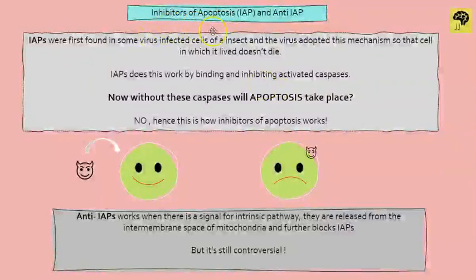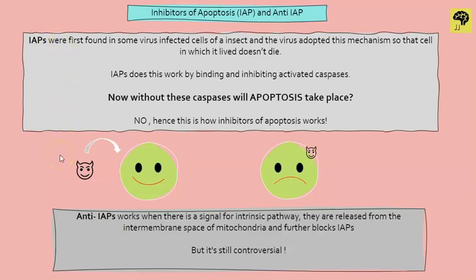IAPs go and attach to activated caspases — so the caspases cannot work and apoptosis is inhibited. That's why they're called inhibitors of apoptosis. To tackle this, anti-IAPs come into action. They are present inside the mitochondria and when MOMP occurs, they also sneak out along with cytochrome c, go and attach to IAPs, and inhibit them — and that's how apoptosis can proceed. In mammals, however, this mechanism is still controversial.